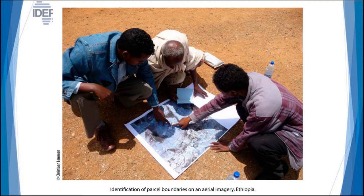Here you have a map from Ethiopia where you see villagers looking at aerial imagery and showing their own parcels, because they were able to recognize their parcel based on the visible boundary option — for example, the tree which is next to a particular house.